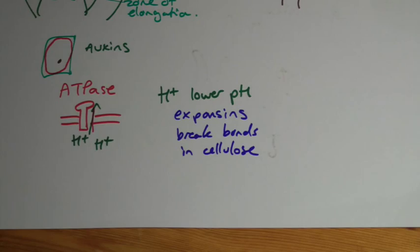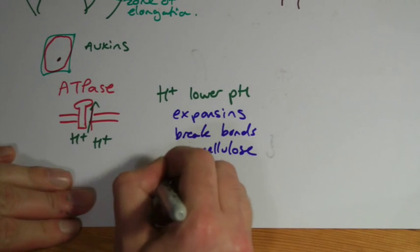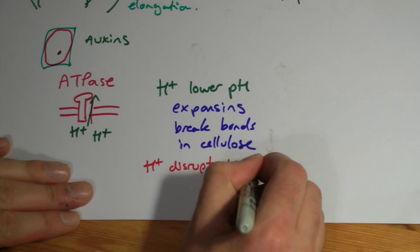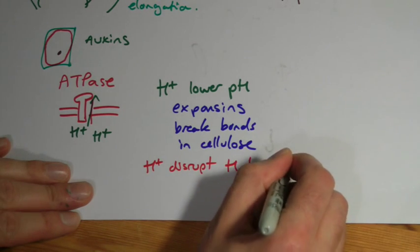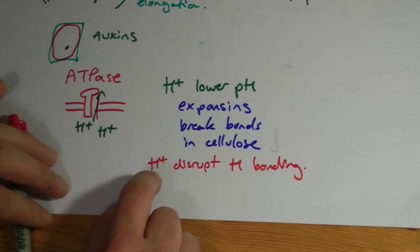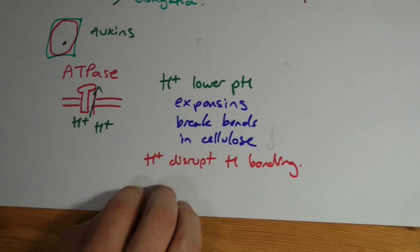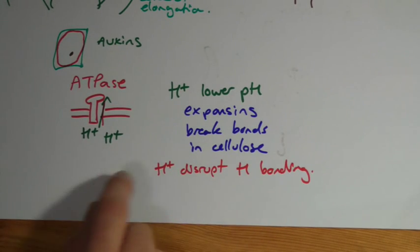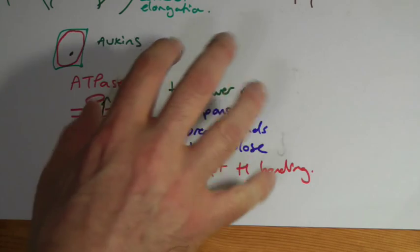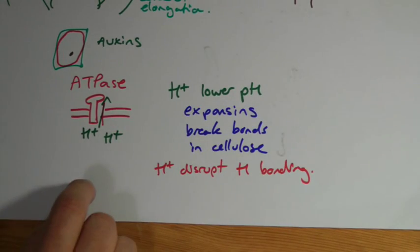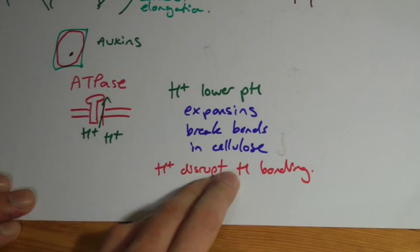You also have the additional benefit that these hydrogen ions will disrupt hydrogen bonding. If you remember right back when you did enzymes, one of the effects of changing the pH was it would affect hydrogen bonding in the tertiary structure of proteins. Similar idea here, except it's affecting the hydrogen bonds between the beta glucose molecules which make up cellulose.